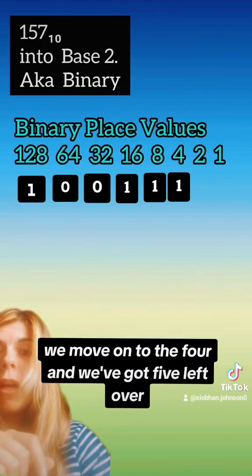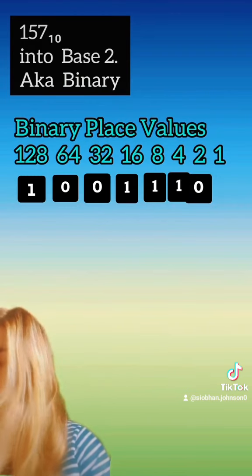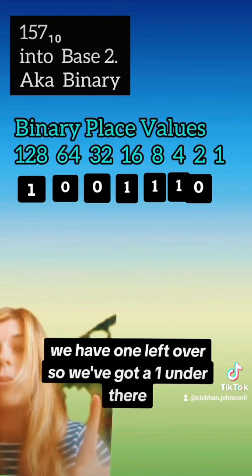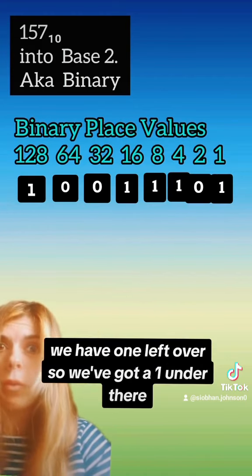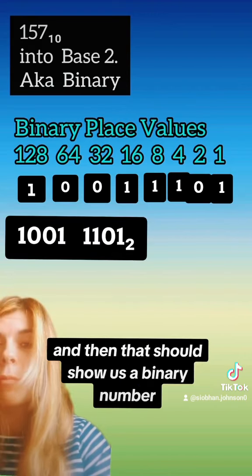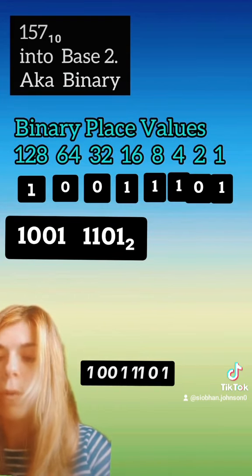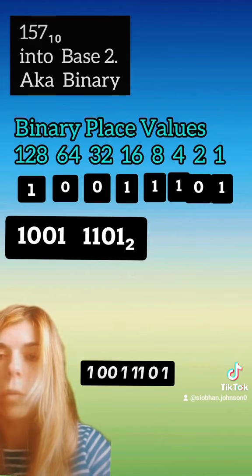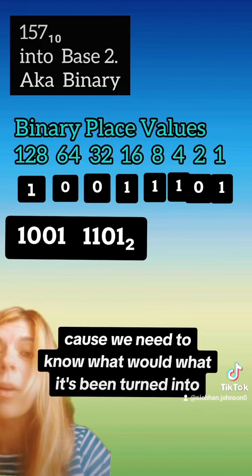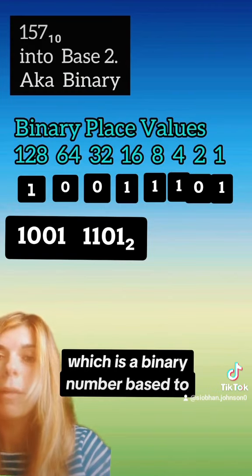We move on to the 4 and we've got 5 left over, so we can do that — we've only got 1 left. We go to the 2, we obviously don't have enough, so that's a 0. We go to the 1, we have 1 left over, so we've got a 1 under there. That gives us our binary number: 10011101. Don't forget your subscript 2, because we need to know what it's been turned into, which is a binary number, base 2.